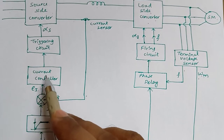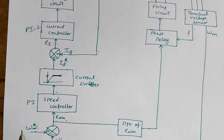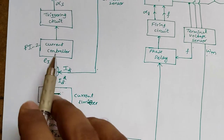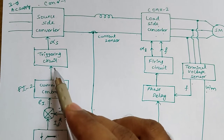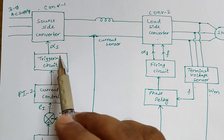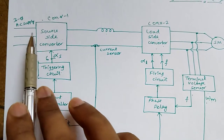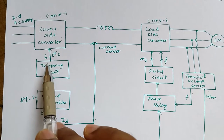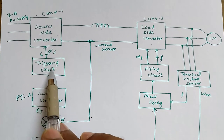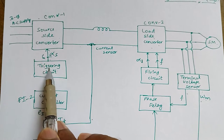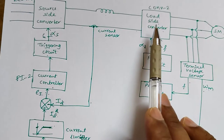The current error is connected to the current controller, which is a second PI controller (PI2), while the first PI controller (PI1) is the speed controller. The output of the current controller is given to the triggering circuit, which generates six firing pulses. These six firing pulses are connected to the source side converter — a three-phase rectifier with six controlled switches — and the triggering circuit generates these six firing pulses with 60-degree displacement. This completes the closed loop path.